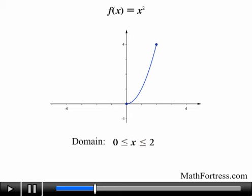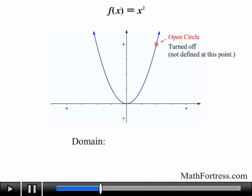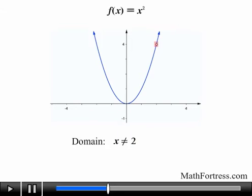As we've seen, we can turn off and on certain parts of the domain by setting a restriction. Now let's restrict a certain value — say we do not want to include x = 2. The value the function obtains at x = 2 will be turned off and replaced with an open circle. The inequality representing this is x ≠ 2, meaning the domain is defined everywhere except at x = 2, creating a hole or gap in the function.